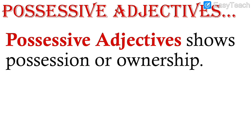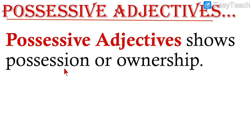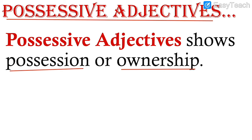Today we will learn about possessive adjectives. First, learn the spelling: P-O-S-S-E-S-S-I-V-E. Possessive adjectives show possession or ownership — who is the owner of the particular thing. For example, if I say whose book is this, you can tell me: sir, this is my book. So the book belongs to you — that shows ownership.